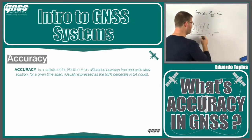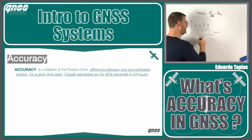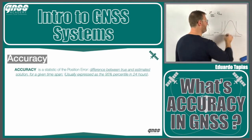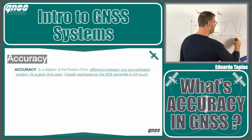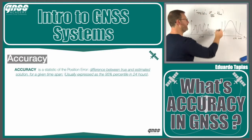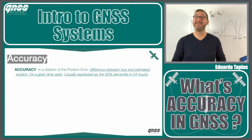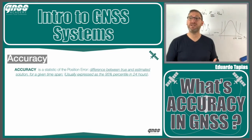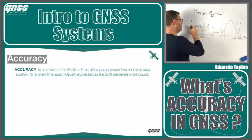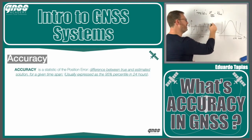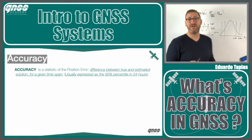We build a statistic over, for example, 24 hours. We get a standard deviation and can compute percentiles of these statistics — for example the 67th, 95th, or 99th percentile. The accuracy is typically defined as the 95th percentile of the positioning error. This means that 95% of the time I will be below four meters, and only 5% of the time above four meters.